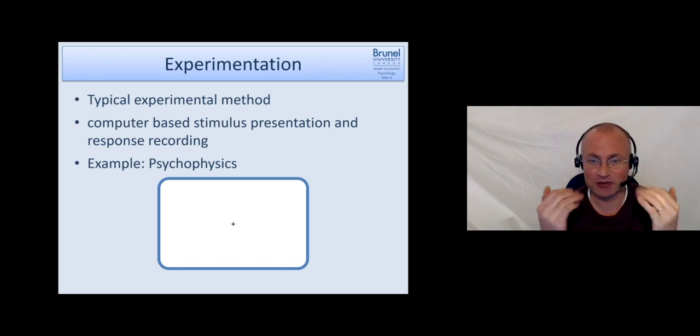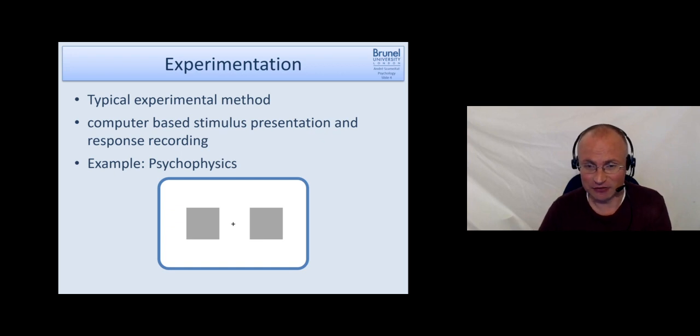If you have two fingers then you would press the one for the brighter one. Then you record this response, and then you may change the brightness, make them a little bit more similar to make the task more difficult. This is called a trial, this presentation of one stimulus and you respond. You do literally hundreds and hundreds of those trials, and then it's possible later on to derive some information about which similarity in brightness they can still detect and which one is too similar. We can determine the threshold in brightness detection.